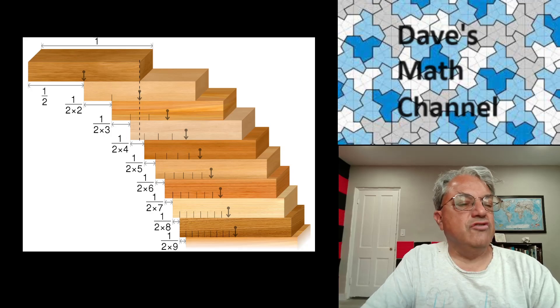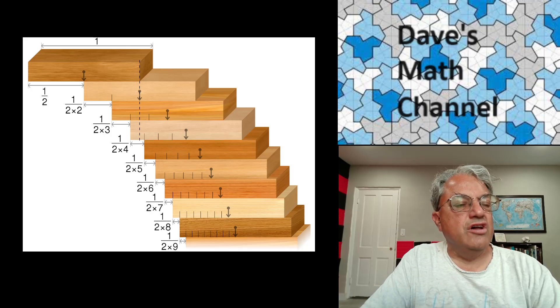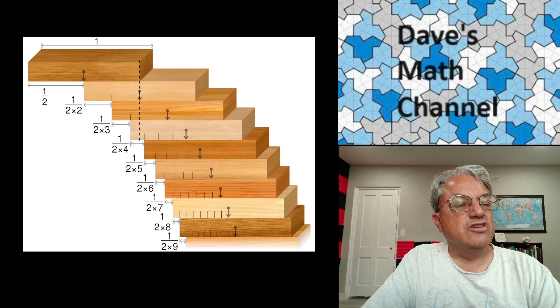And you can do the same thing for every other block. Now, for the second block, you can't overhang it as far. It turns out you can only overhang it a quarter of a block length. And the reason for that is, now you have to ensure that the top two blocks are balanced along the edge of the third block. So the center of mass of the top two blocks can't be over the edge of the third block. And it turns out that the maximum possible overhang that will make that possible is a quarter of a block length.